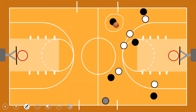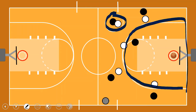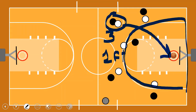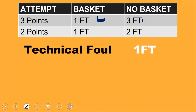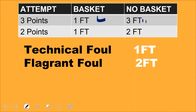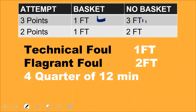Here's how free throws are awarded: if your player is attempting a three-pointer and is fouled, and the ball goes in, they get one free throw. If the ball doesn't go in, they get three free throws. If attempting two points and the basket is made, one free throw is given. No basket — two free throws. A technical foul, for abusive or unsportsmanlike conduct, results in one free throw. A flagrant foul, where a player seriously injures the opponent, results in two free throws.